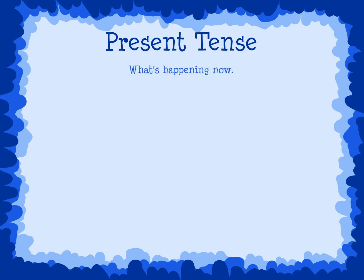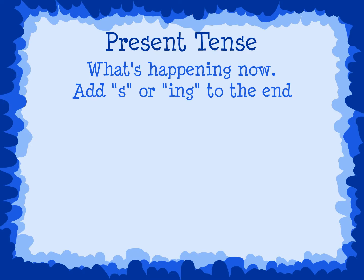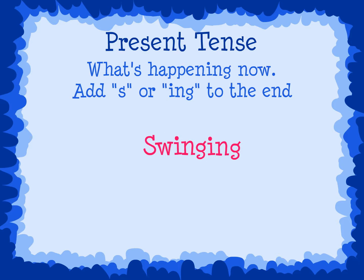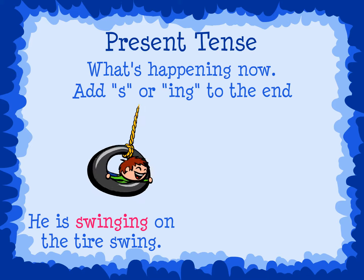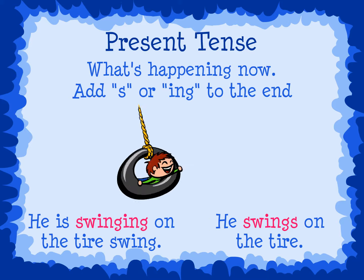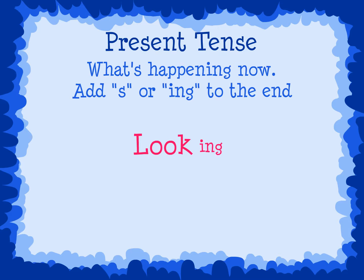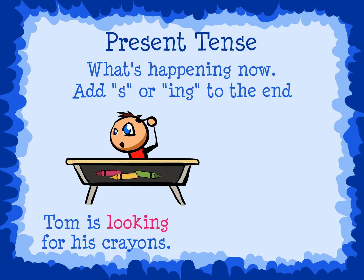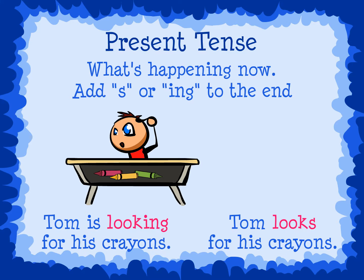When we are talking about an action that is happening now or in the present, we add S or ING to the end of the verb. For example, if you add ING to swing, you get swinging: 'He is swinging on the tire swing.' If you add S to swing, it becomes swings: 'He swings on the tire.' If we add ING to look, it becomes looking: 'Tom is looking for his crayons.' If we add S to look, it becomes looks: 'Tom looks for his crayons.' All of these are examples of action verbs happening now.